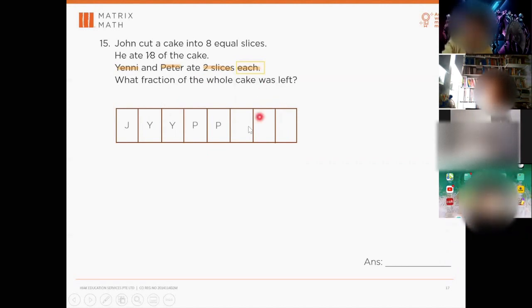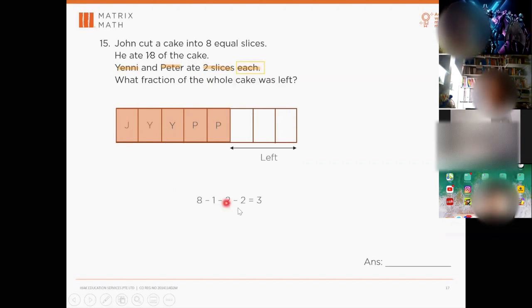So what fraction of the whole cake was left? Whatever is left in the end, you should have these three pieces left. So then you can do the number statement. You will get eight minus one minus two minus two. Minus one for John, minus two for Yanny, minus two for Peter. So you end up with these remaining three pieces left. So three pieces over all the eight pieces.